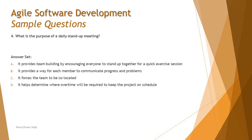Let's look at the options. Option A says it provides team building by encouraging everyone to stand up together for a quick exercise session — no, it's not about that, it's for status updates, so A is not valid. Option B says it provides a way for each member to communicate progress and problems — that's what it is, and it makes more sense.